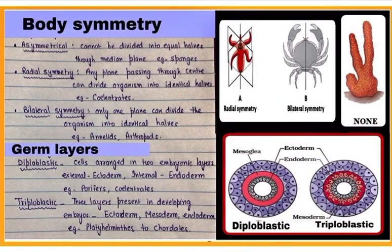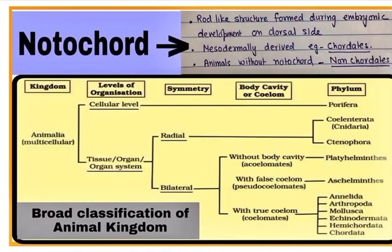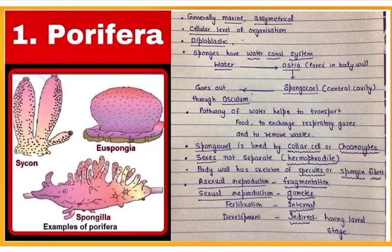body symmetry, number of germ layers present at embryonic stage, presence or absence of coelom, segmentation of body, and presence or absence of notochord. See the table — it is showing broad classification of the animal kingdom. The first phylum is Porifera.